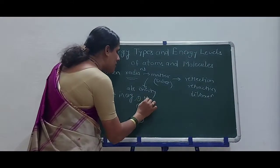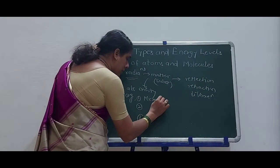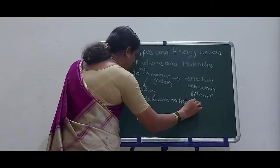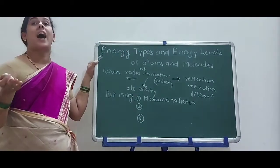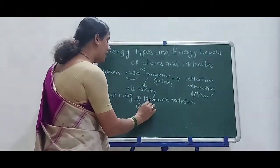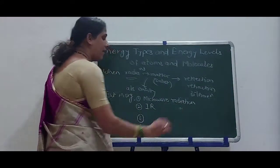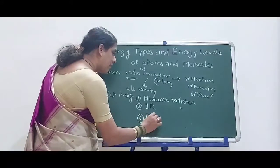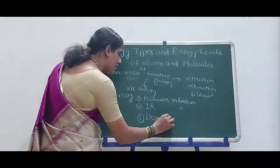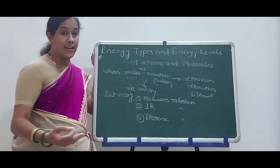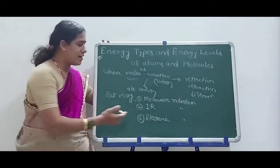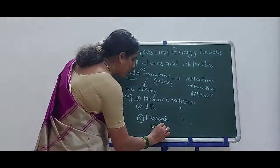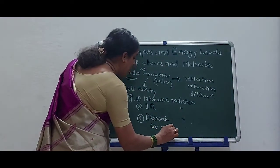The first radiation is microwave radiation. The second radiation is IR radiation. And the third radiation is electronic radiation. Electronic radiations are nothing but UV radiations.